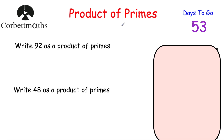We're now going to look at how to use product of primes to find the lowest common multiple and the highest common factor. I've got two warm-up questions: can you write 92 as a product of primes, as a list and in index form? And also can you write 48 as a product of primes using your calculator?